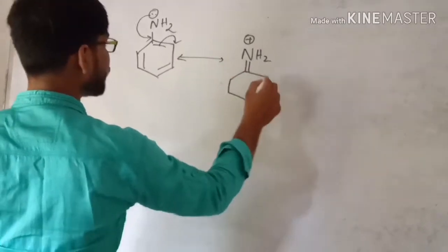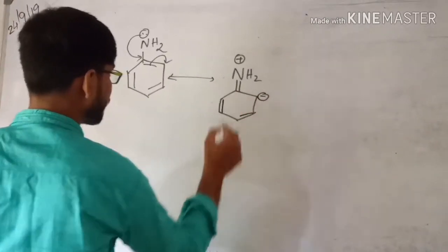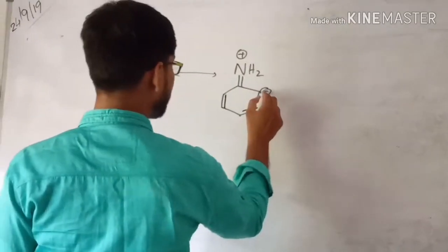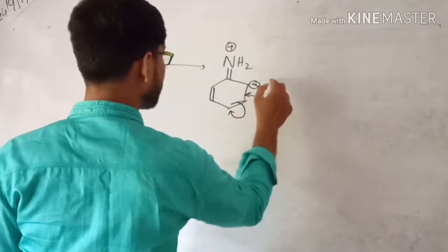And this bond will be migrated onto this carbon atom. In the next step, this negative charge will make a new bond and this bond will be on this carbon atom.